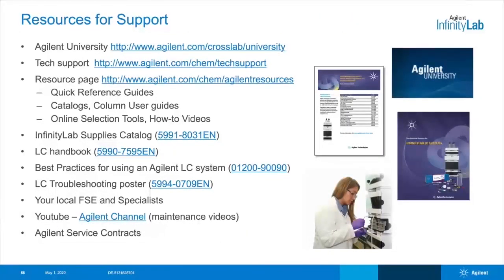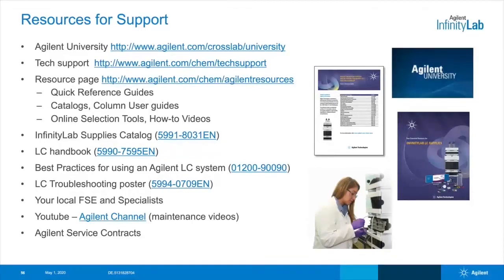For your future reference, here's a list of resources. If you're looking for additional training, definitely check out Agilent University. For tech support, here's an address you can go to with all kinds of helpful resources. We have another resource page as well, where you'll find things like quick reference guides, catalogs, column user guides, various online selection tools, as well as how-to videos. Earlier, I mentioned the Infinity Lab Supplies catalog that has all kinds of supplies for your Agilent LC systems. If you're new to LC, check out the LC Handbook. Another helpful document to have on hand is called Best Practices for Using an Agilent LC System. Also check out the LC Troubleshooting Poster. You should be able to pull them up just by typing in the publication number in the search bar on Agilent.com. On YouTube, there's an Agilent channel that has some really nice maintenance videos.